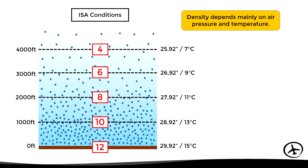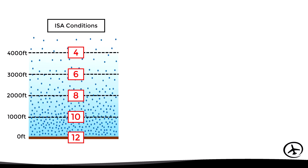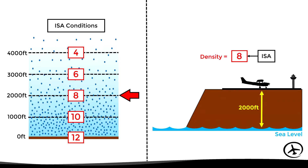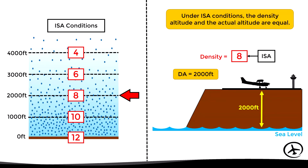With this in mind, suppose we are at an airport with an elevation of 2,000 feet and conditions are standard. In the ISA model at 2,000 feet we find an air density of 8. Therefore we say the density altitude is 2,000 feet. In standard conditions the density altitude will be equal to the actual altitude.